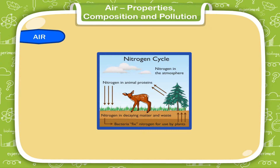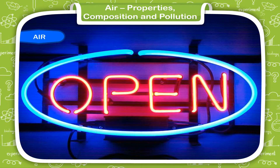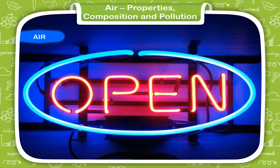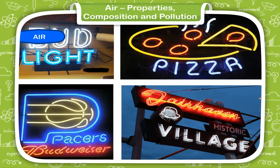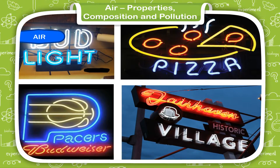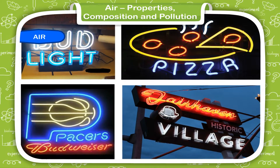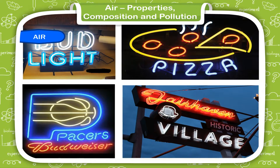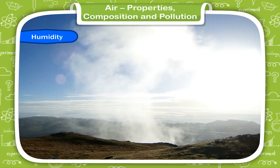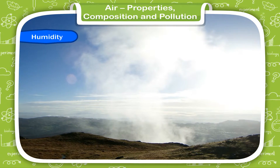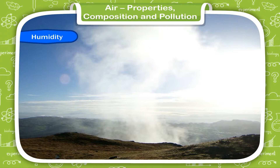Neon is a gas used in electric signboards. It has a bright orange glow. Argon is used in glass tubes to produce a coloured glow. Water vapour is always present in the air.